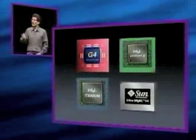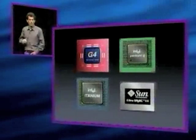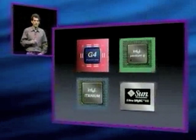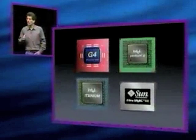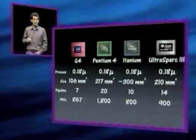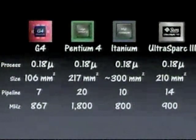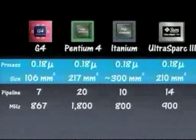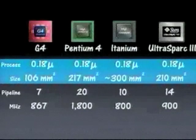Here are the four leading processors in the industry today: the PowerPC G4 — my personal favorite — the Pentium 4, Intel's next generation 64-bit architecture the Itanium, and Sun's latest Spark processor, the Ultra Spark 3. We can compare several characteristics: the process, the size, the number of pipeline stages, and how many megahertz they run at. Most people would assume that because the Pentium 4 runs at 1.8 gigahertz, it would be in a much faster process. But the reality is all four of these processors are in the same process, give or take. And it's interesting to note that the G4 is a very efficient design, because it's half the size of the other processors.